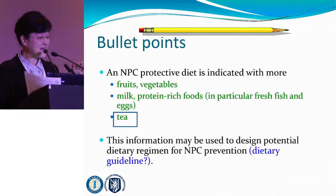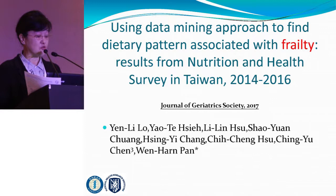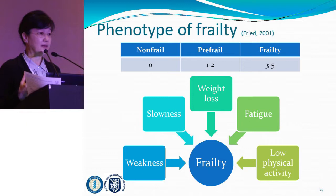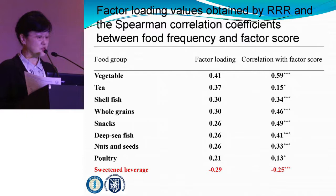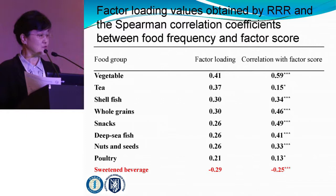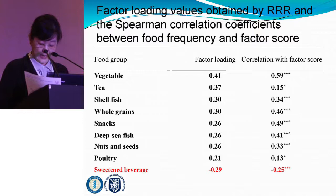The second example is a dietary pattern associated with frailty. We used data from the nutrition and health survey in Taiwan, recently published in Geriatric Society. For this study, the endpoint is a continuous variable on a scale from 0 to 5, where people score one point for each symptom: weakness, slowness, weight loss, fatigue, and low physical activity. By applying reduced rank regression as a dimension reduction approach, we found that vegetables and tea stand out, as well as deep-sea fish and other protein-rich foods like shellfish — all identifying a vital nutrient-rich dietary pattern.